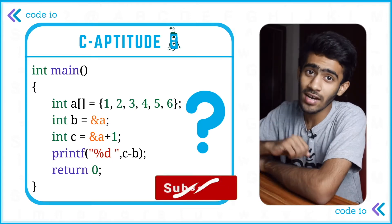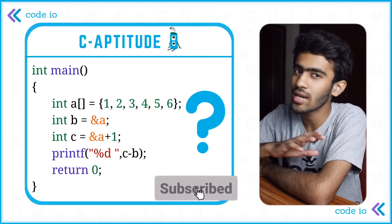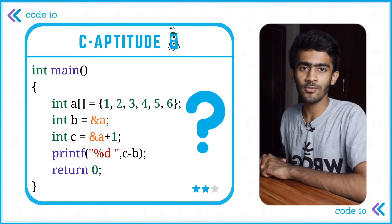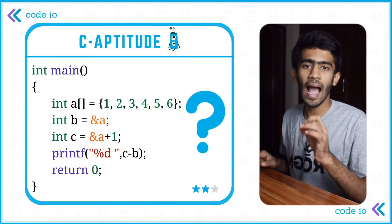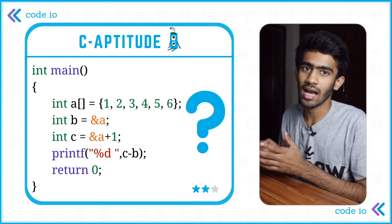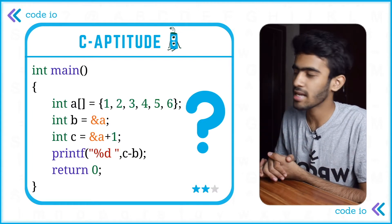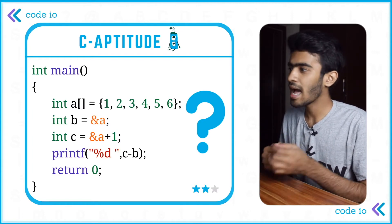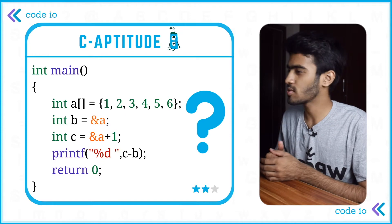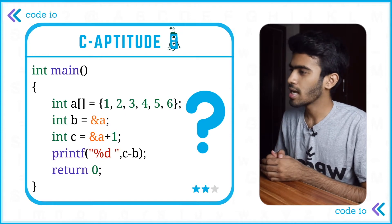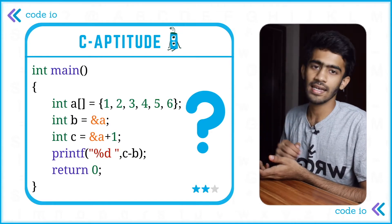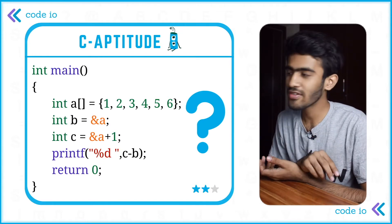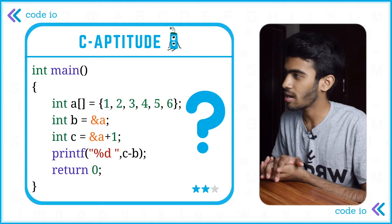So first, int a will give an integer array. In the next line, int b will give an ampersand a — that's what memory location b is stored. Int c will give an ampersand a plus 1. That's what we print. Then we print the two integers c and b. We print the difference c minus b.